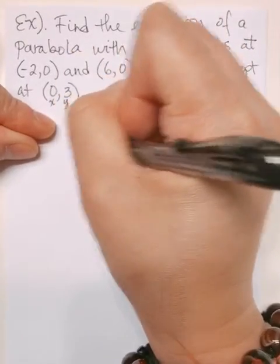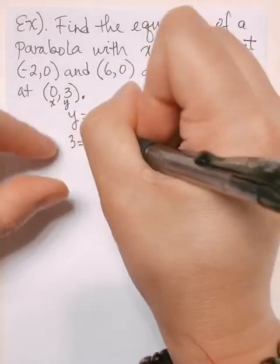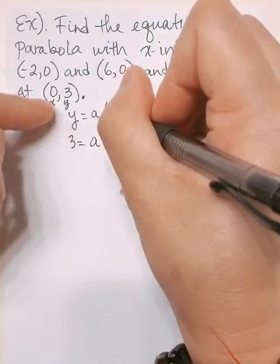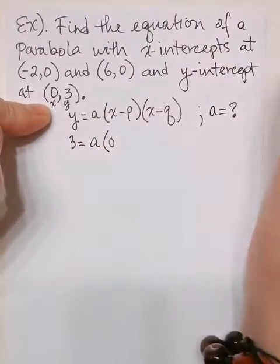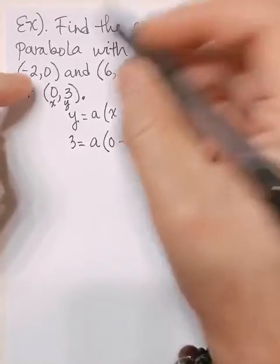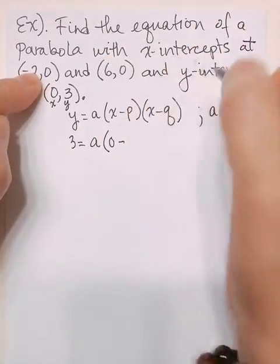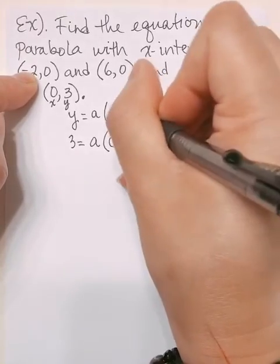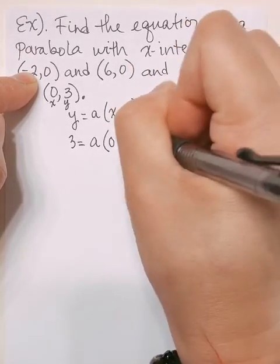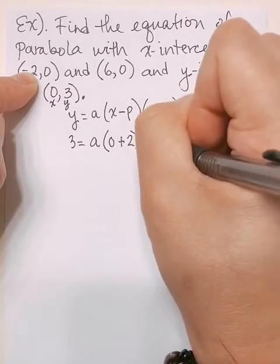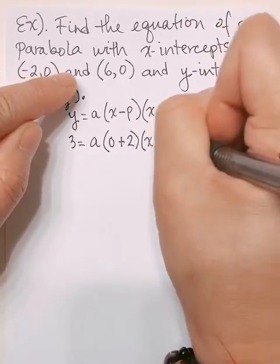3 = a(x - p)(x - q). x is 0, so that helps out. Our first x-intercept, p, is -2. So it's minus a negative 2, which I'll change to plus 2, and then times (x - q).